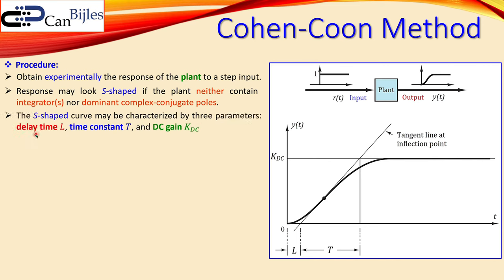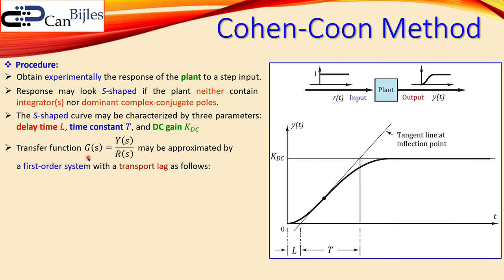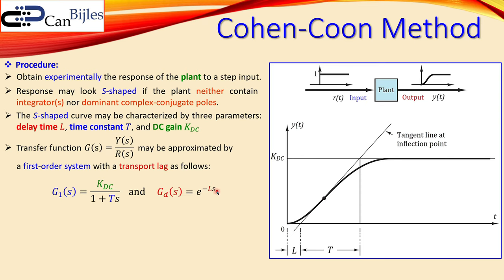The S-shaped curve is characterized by these three parameters. The transfer function of the plant is the output Y over input R in the Laplace domain, and it can be approximated by a first order system in cascade with a delay. G1 is the first order transfer function model with Kdc and time constant T. The pure delay is given in the Laplace domain by e to the power of minus Ls, where L is the delay in seconds and T is also in seconds. Cascading these gives the complete plant transfer function: a first order system cascaded with the pure delay.